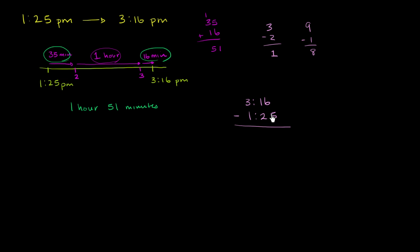So like all subtraction, you try to see if the numbers above that you're subtracting from are larger than the numbers that you're taking away. 6 is larger than 5, so we're cool there. 1 is not larger than 2, so we want to borrow or regroup. And we want to borrow from the 3 right over here. This is 3 hours.